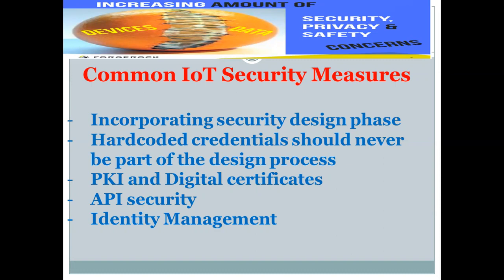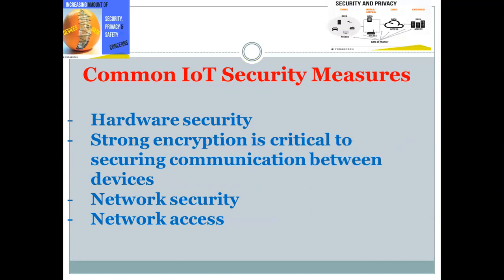Identity management: Providing each device with a unique identifier is critical to understanding what the device is, how it behaves, the other devices it interacts with, and the proper security measures that should be taken for that device. Hardware security: Endpoint hardening includes making devices tamper-proof or tamper-evident, and is especially important when devices will be used in harsh environments or when they will not be monitored physically. Strong encryption is critical to ensure communication between devices, and data at rest and in transit should be secured using cryptographic algorithms, including the use of key lifecycle management.